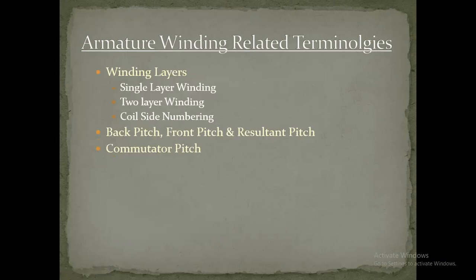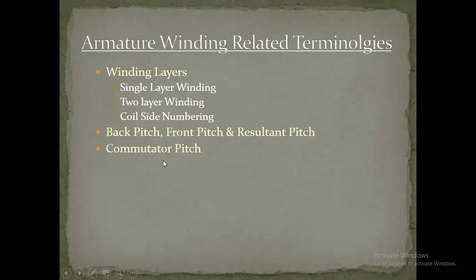Continuing with armature winding terminologies: winding layers consist of single layer winding, two layer winding, and coil side numbering. There is also back pitch, front pitch, and resultant pitch. Commutator pitch refers to the distance between the centers of adjacent commutator segments. The commutator is made up of copper segments, and the distance from the center of one segment to the center of the next is called the commutator pitch.